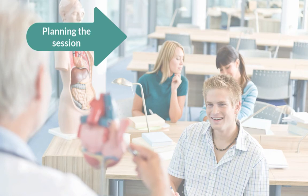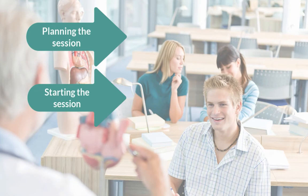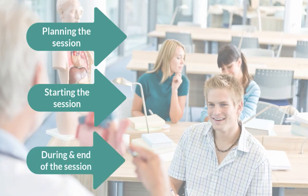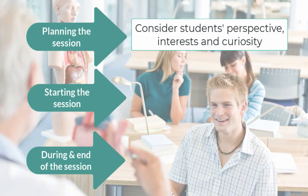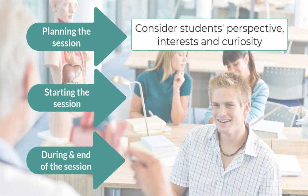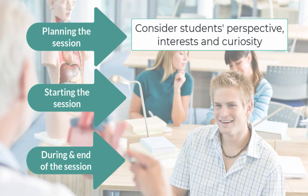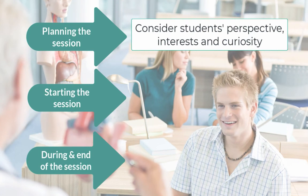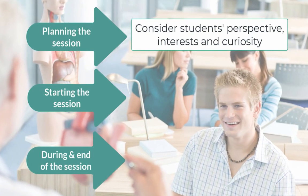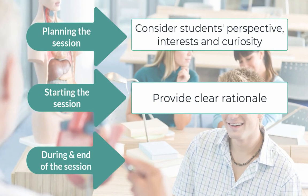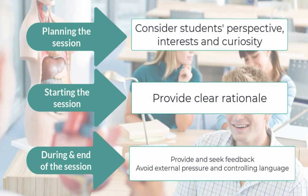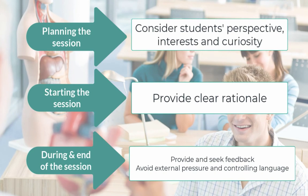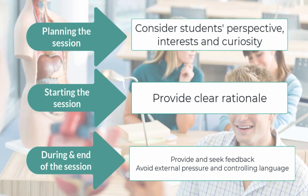If we take this to how we plan our lessons, we may think of what we could do at the planning phase, at the start of the lesson, and during and at the end of the session. In the planning phase, it is important to take the students' perspective and ask yourself: what will students see when I present this activity? Will this be relevant to them? Will it stimulate their curiosity? This is crucial to vitalize their autonomous motivation. When starting your lesson, do not forget to explicitly provide rationale for engagement — students need to know why this should be important for them.